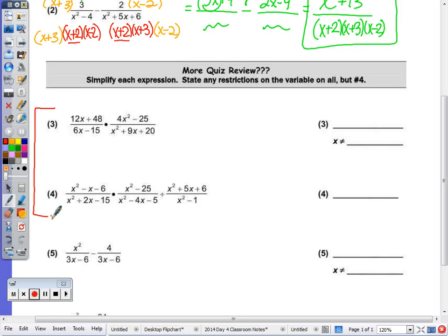To multiply we first simplify. So I'm going to go ahead and factor everything because to simplify we factor and cancel. So GCF of 12, so 12 times x plus 4 will give me 12x plus 48. GCF of 3, so 3 times 2x minus 5.